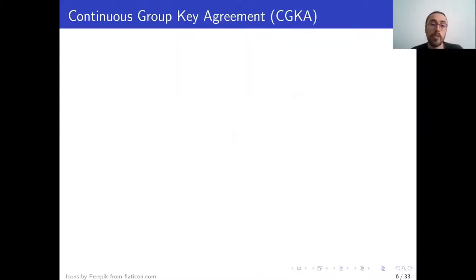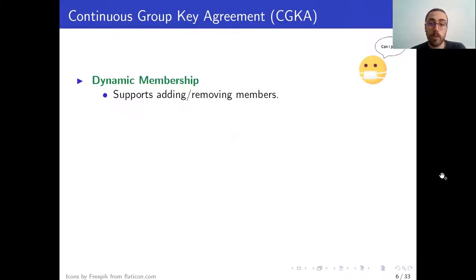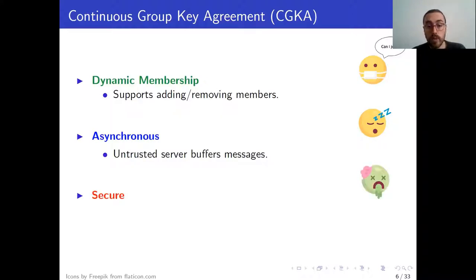Let's start with what we would expect from a continuous group key agreement or from secure group messaging. And the first thing we want is for it to be able to support dynamic membership, so we want to be able to add and remove users. Secondly, we want it to be asynchronous, so we don't want to make any assumptions on the online behavior of users. And third, we want it to be secure. We assume that some users will get corrupted throughout the protocol execution. And in this case, we want to ensure forward secrecy and post-compromise security.